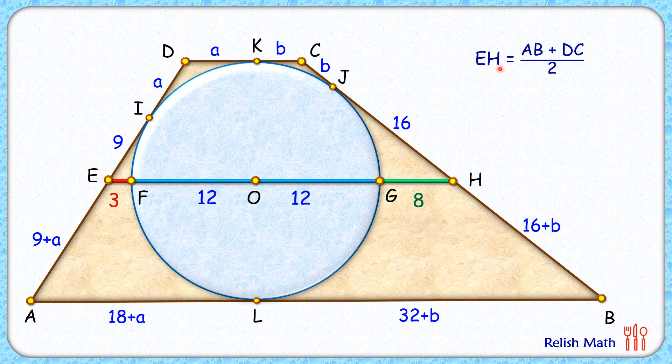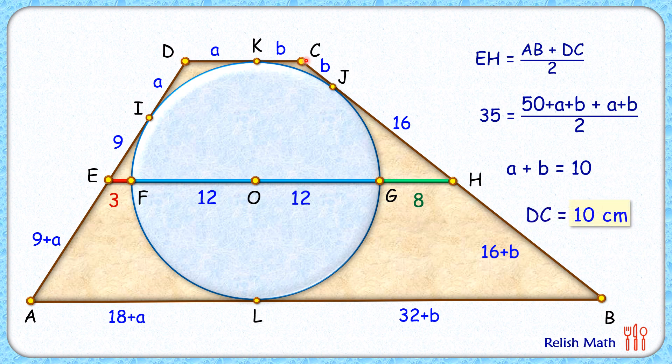Now here putting the values, EH is 3 plus 24 plus 8 and that is 35. AB length is 50 plus A plus B, and DC is A plus B. So putting these values here we'll get this equation. Solving it for A plus B, we'll get A plus B length as 10 cm. But A plus B is nothing but DC length, and thus DC is 10 cm, and that's our answer.